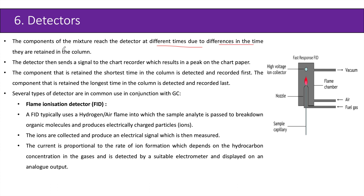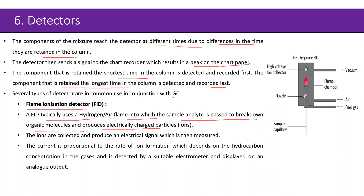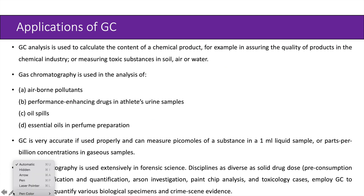The components of the mixture reach the detector at different times due to differences in their retention times in the column. The detector sends a signal to the chart recorder, which produces a peak on the chart paper. The component retained the shortest time is detected and recorded first; the component retained the longest is detected and recorded last. One common detector is the flame ionization detector (FID), which uses a hydrogen/air flame to break down organic molecules and produce electrically charged ions. These ions generate an electrical signal proportional to the rate of ion formation, which depends on hydrocarbon concentration, detected by a suitable electrometer and displayed on an analog output.